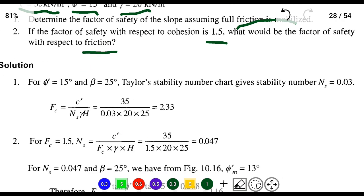For the solution, for φ' = 15° and β = 25°, from Taylor's stability chart we get the stability number Ns = 0.03.